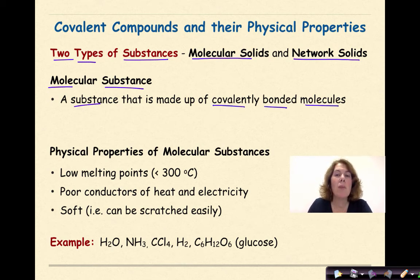The physical properties of molecular substances is that they typically have low melting points, less than 300 degrees Celsius. These are poor conductors of heat and electricity and they tend to be soft. In other words, they can be scratched easily.